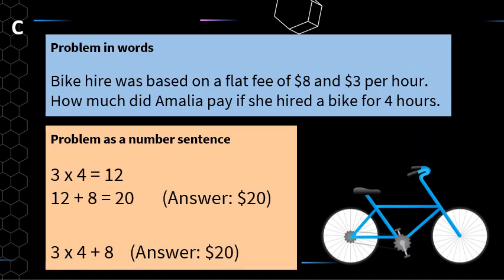In our last couple of slides, each of the problems only had a single operation or a single type of operation — the first one was addition, and the second one was subtraction. Here, we have a word problem which requires a number sentence with two or more different types of operations.